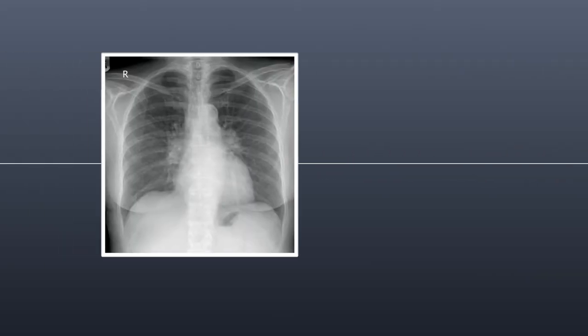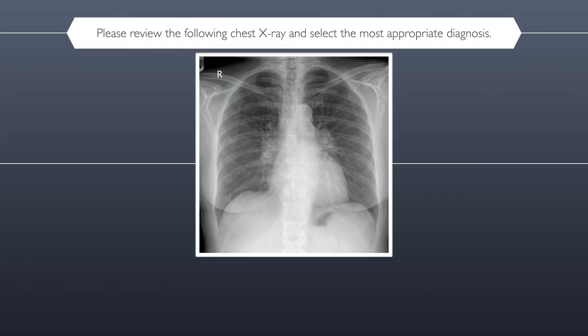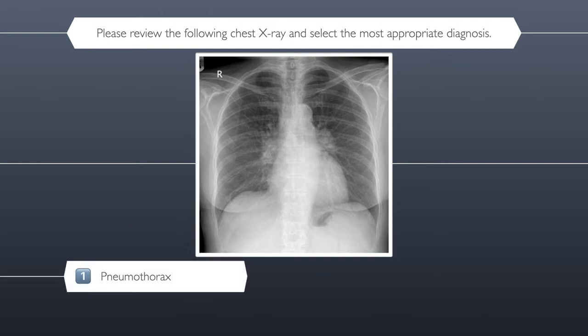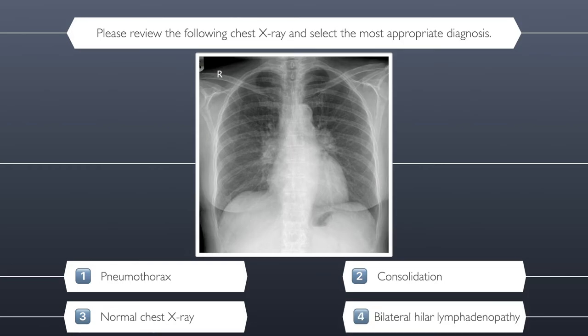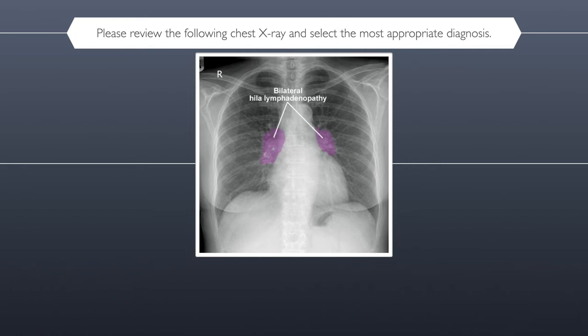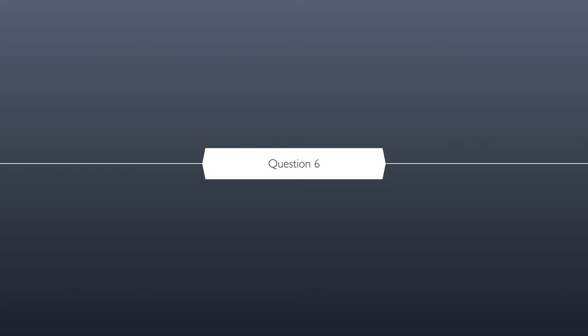Question five. Please review the following chest x-ray and select the most appropriate diagnosis. Here are your four possible answers: number one pneumothorax, number two consolidation, number three a normal chest x-ray, or number four bilateral hilar lymphadenopathy. The correct answer is bilateral hilar lymphadenopathy.